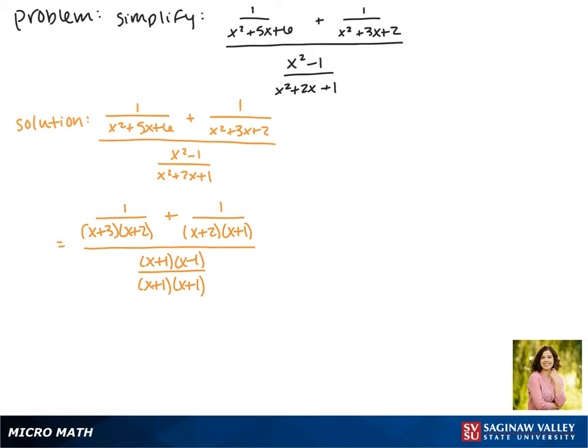Now in the numerator we want to combine these terms so we need to get a common denominator. That first term is missing a factor of x plus 1 so we're going to multiply the top and bottom by x plus 1. On the other term we're missing a factor of x plus 3 so we'll multiply the top and bottom by x plus 3.